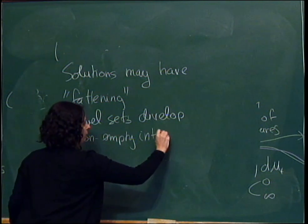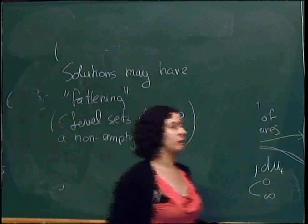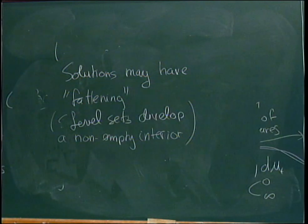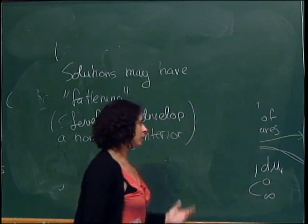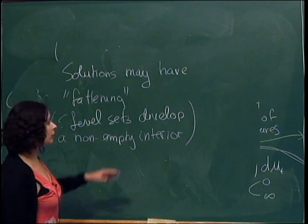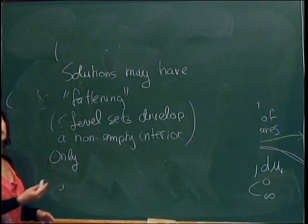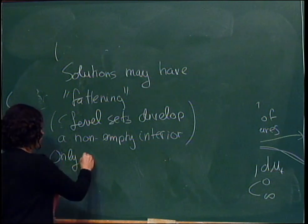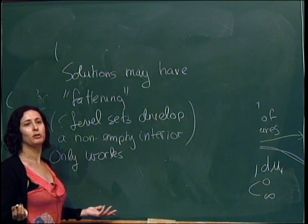The problem with the level set method is that solutions may have fattening — sets develop a non-empty interior. This is actually very much related to the fact that Brakke flow is non-unique: when you have non-uniqueness in Brakke flow, it's usually because you're going to have fattening in the level set flow. So you can more or less choose which one you want to work with. Another disadvantage is that this method only works for codimension one.